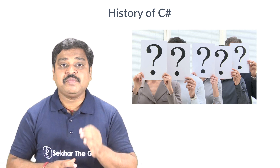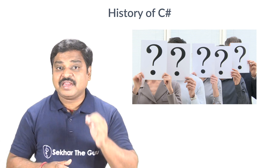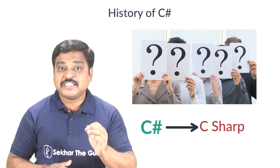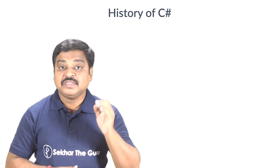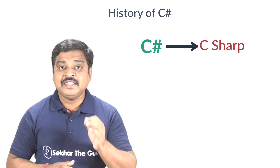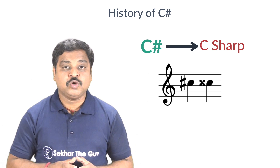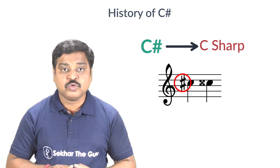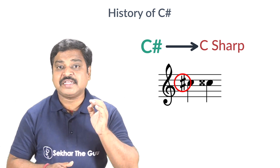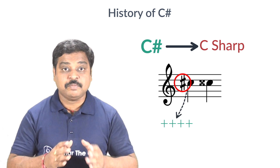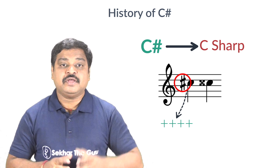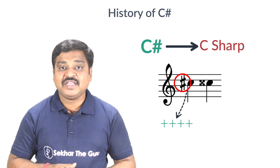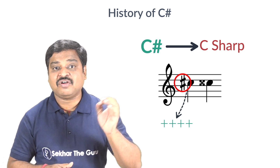Many people ask why we write C hash and pronounce it as C Sharp. The name C Sharp was inspired by the musical note sharp, which means higher in pitch. Also, the musical sharp symbol resembles four plus symbols in a 2x2 grid, which clearly implies that this language is an incrementation of C++.